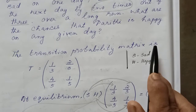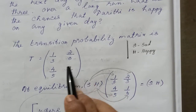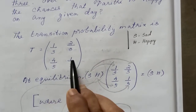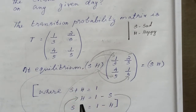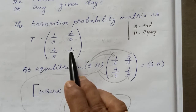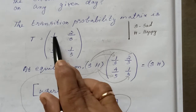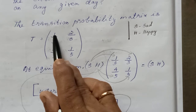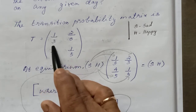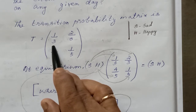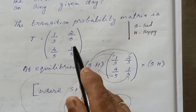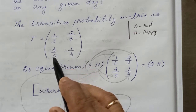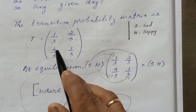T is equal to: [1/3, 2/3; 4/5, 1/5]. Now let's take a look at the transition probability matrix. The first row represents: given sad one day, what is the probability of sad or happy on the next day?